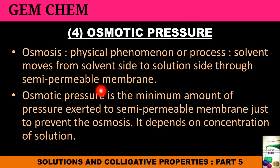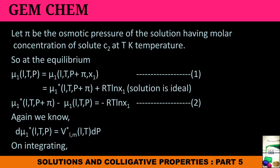Now let's consider that pi be the osmotic pressure of the solution having a molar concentration of solute c2 at T kelvin temperature. So at equilibrium, this is our pure state and this is when osmotic pressure is starting to occur due to the presence of solution. We have taken the pressure as P plus pi and this is our X1.